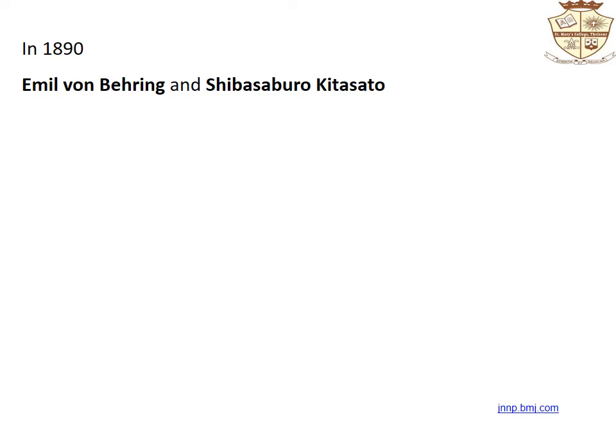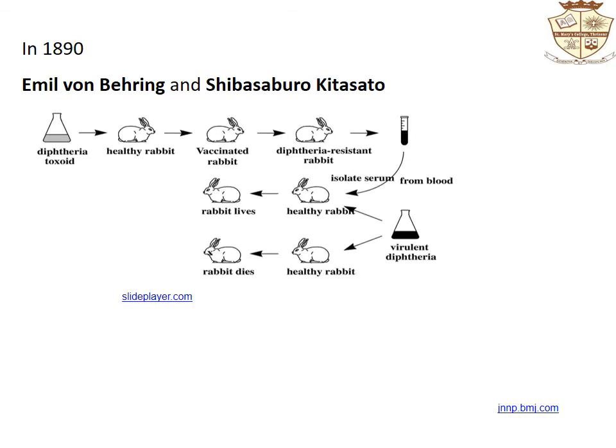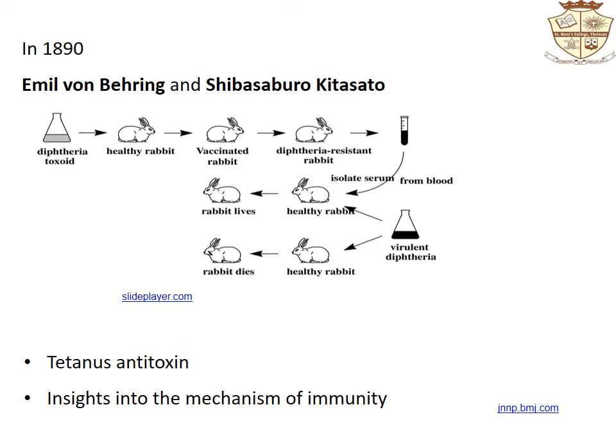In 1890, Emil Behring and Kitasato injected inactivated diphtheria toxin into rabbits, inducing them to produce an antitoxin to inactivate the toxin and protect themselves against the disease. It was demonstrated that the serum from animals immunized to diphtheria could transfer the immune state to unimmunized animals. Their work gave insights into the mechanism of immunity, and a tetanus antitoxin was also prepared by them.